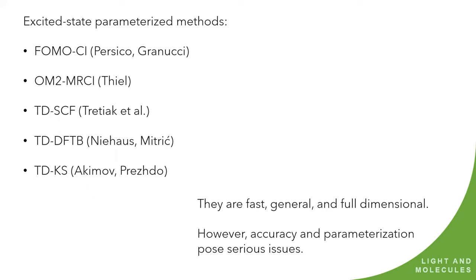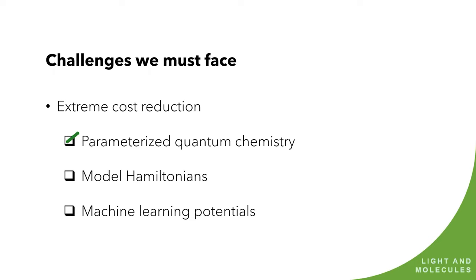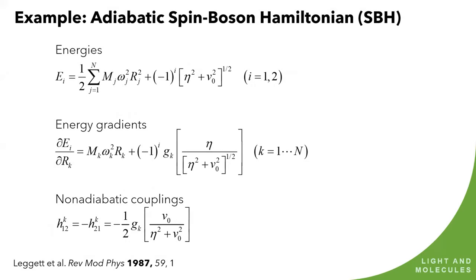There are different strategies that you can do to reach the cost reduction. You can start with a parameterized quantum chemistry, so semi-empirical. You take a method like FOMO-CI from Persico and Granucci, or OM2-CI from Thiel, or the method from Tretiak group, the FTB, time-dependent Kohn-Sham from Akimov and Prezhdo. All these are great methods. They are fast, they are general, they are full-dimensional. They are really good for long-time scale dynamics. The problem is that they have many issues with accuracy and parameterization. I don't discard them, but you should use them very carefully.